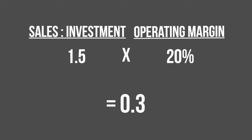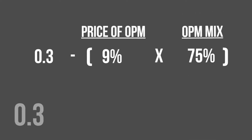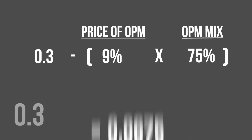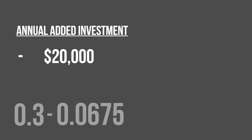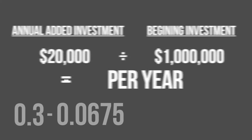Now subtract from this the price of the OPM of 9%, multiplied by the 75% OPM mix. Next, subtract your annual added investment of $20,000 divided by the beginning investment of a million dollars, which is 2% a year. This gets you to 0.3 minus 0.0675 minus 0.02, or 0.2125.